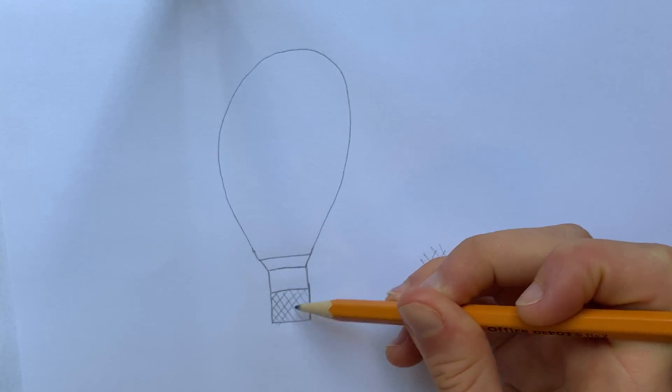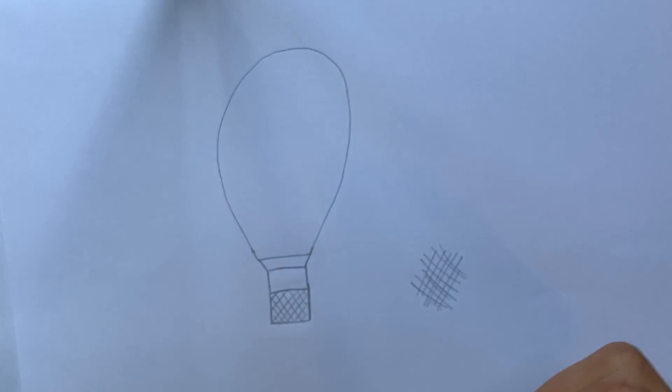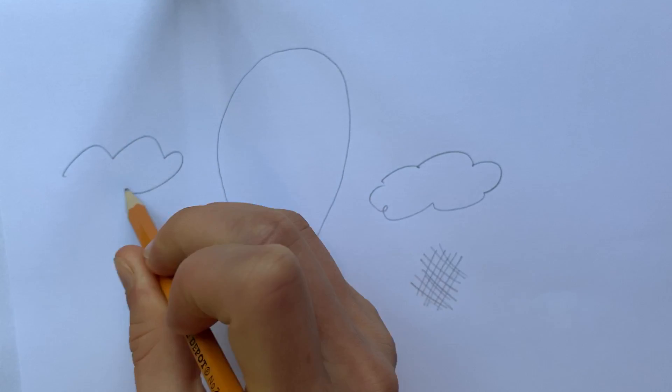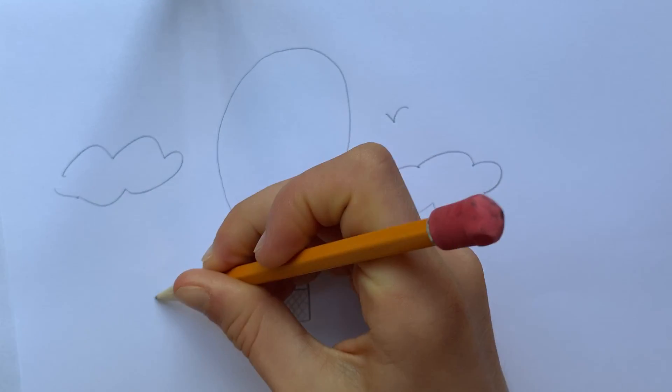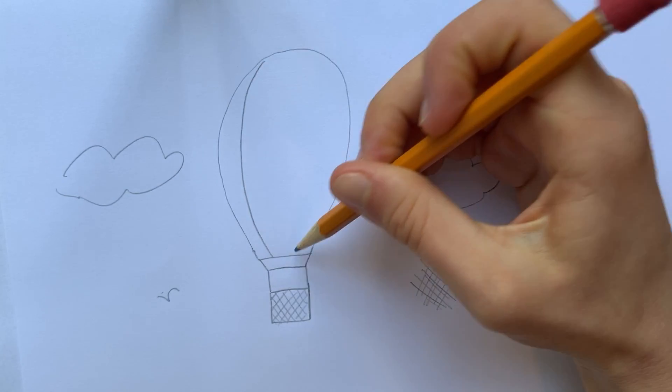Then you can just color this like it is. It's a great hot air balloon. You can add some clouds in the background, some of those little squiggle birds. I like to do lines like this.